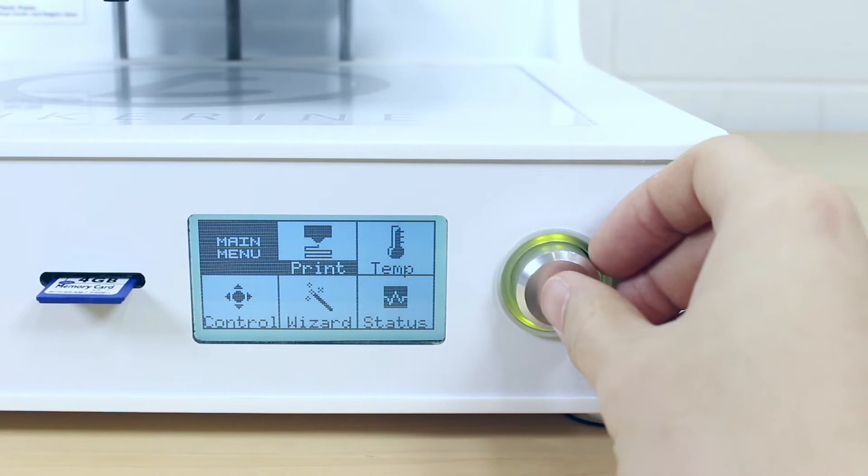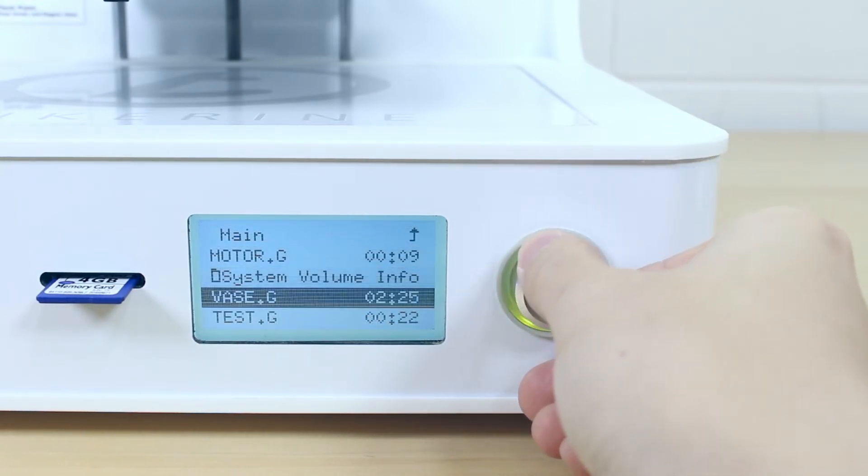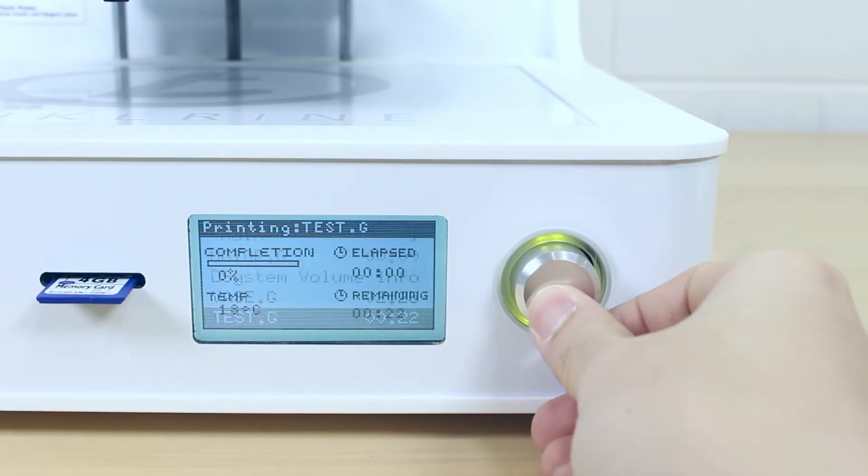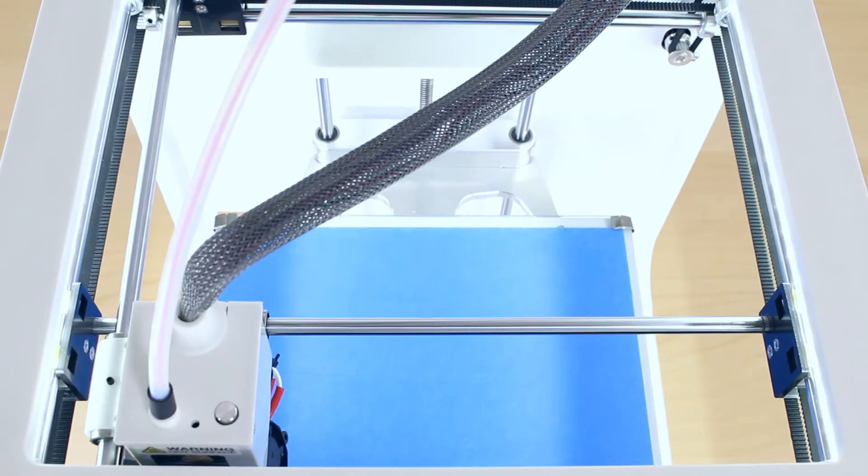To start a print, click into the print option in the main menu. Rotate the control dial to the file you would like to print. Select it. Once you select the file, the printer will automatically home to the front left corner.